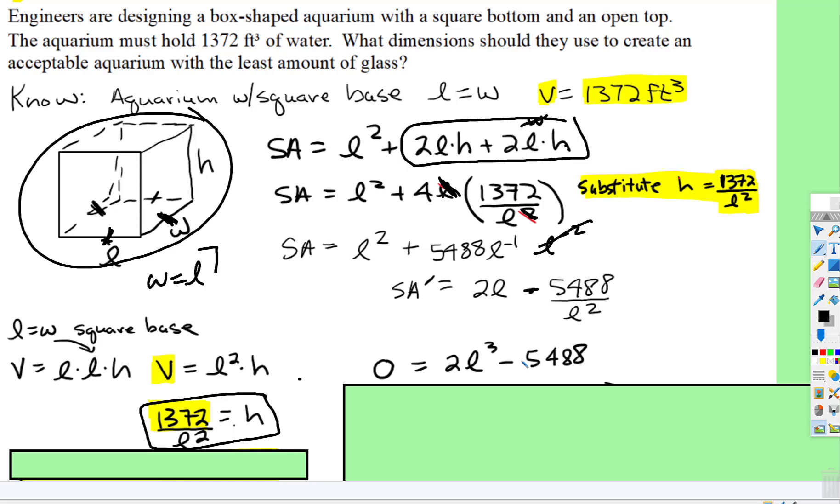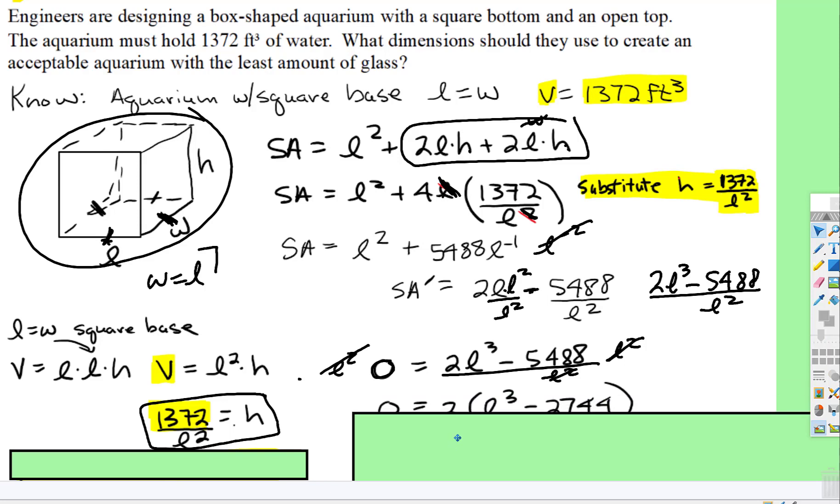And I want these two to have the same denominator. So I'm going to multiply top and bottom by L squared. That gives me 2L cubed minus 5,488 all over L squared. But when I set this side equal to 0, I'm going to multiply both sides by L squared. The L squared times 0 just leaves 0. And then I can factor out a 2. And that leaves L cubed minus 2744.